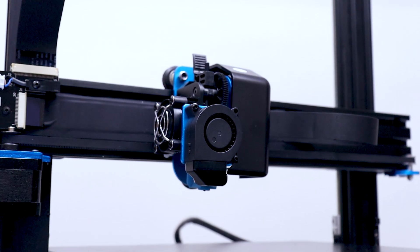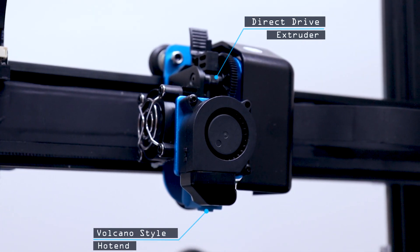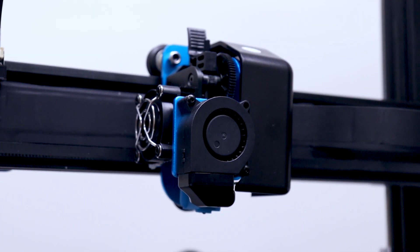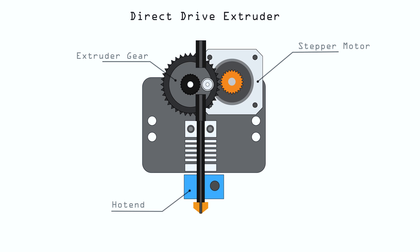The main highlight of this printer is the direct drive Titan extruder and the Volcano style hotend. Basically, in direct drive printers, the extruder motor is directly connected on top of the hotend which minimizes the travel distance of the filament between the extruder gear and the hotend. This setup allows printing flexible filament more reliably.